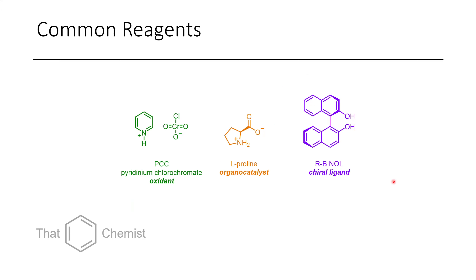Before we start today, I wanted to notify you of a couple of other reagents. The first one is PCC. This is an oxidant used for converting secondary alcohols to ketones and primary alcohols to aldehydes. It's quite a popular reagent, but it's fallen a bit out of favor due to the chromium waste that it generates.